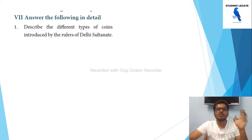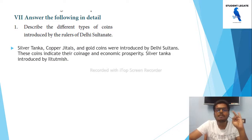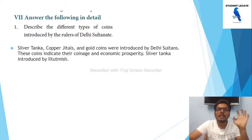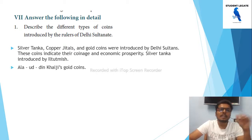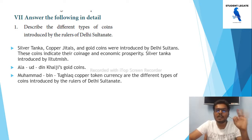Describe the different types of coins introduced during the Delhi Sultanate. The Delhi Sultanate introduced coins as an important part of the medieval period. These coins indicate the coinage and economic prosperity. They introduced silver tanka as well as gold coins and copper coins.